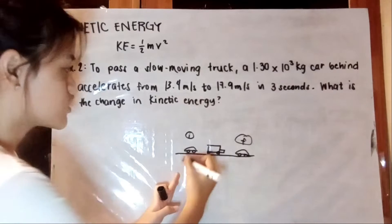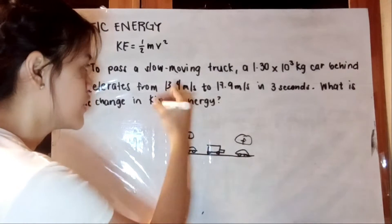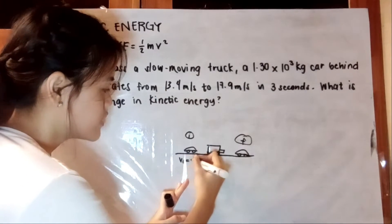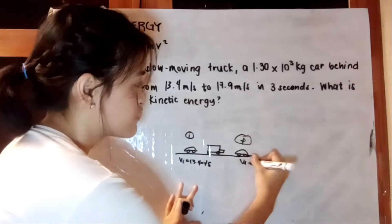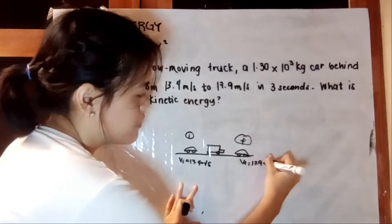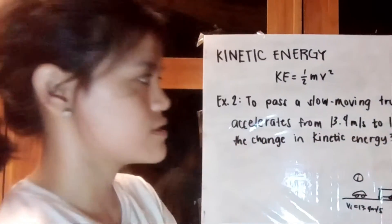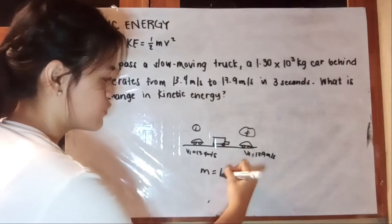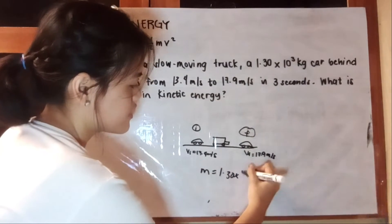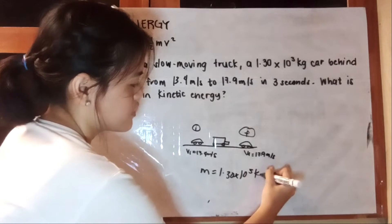In our initial position, we have a velocity of 13.4 meters per second, and in our final position, we have a velocity of 17.9 meters per second. And then we have a mass of 1.3 times 10 cubed kilograms.